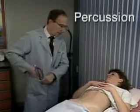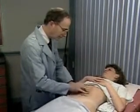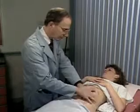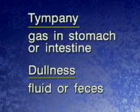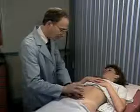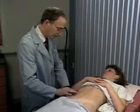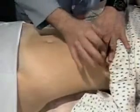Lightly percuss the abdomen to assess the distribution of tympani and dullness. Tympani indicates gas in the stomach or intestine. Dullness suggests fluid or feces. Note any large area of dullness that might suggest a mass or enlarged organ. Briefly percuss the lower anterior chest. On the right, liver dullness is usually present. On the left, you may hear the tympani of the gastric air bubble.